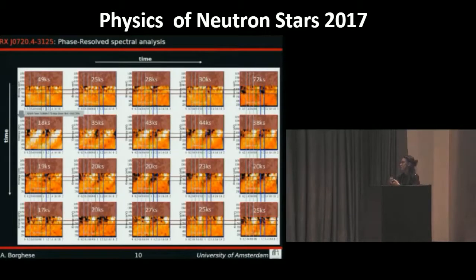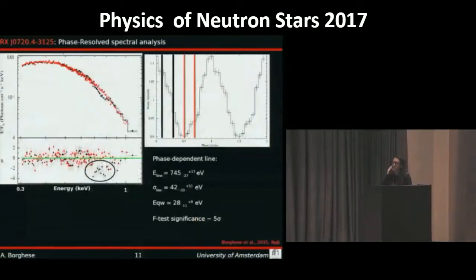The next step was to perform a phase-resolved spectral analysis, so we divided the rotational phase in five bins. For each of them, we extracted the corresponding spectrum. Here in the plot we have in black the spectrum relative to the phase bin where we detected the line, and in red is the spectrum corresponding to another phase bin.